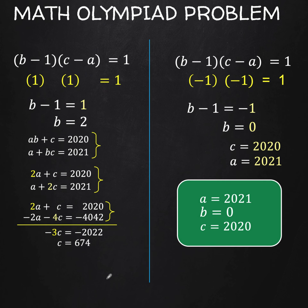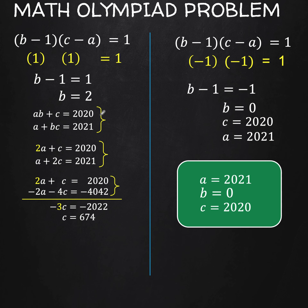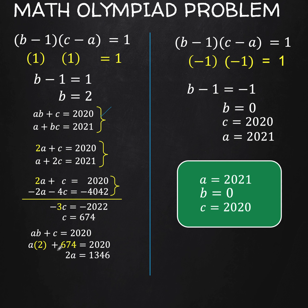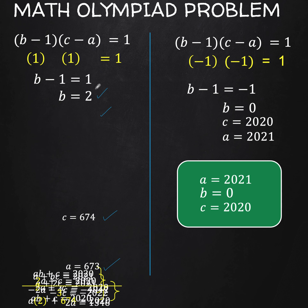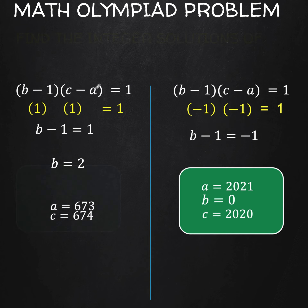We now know B equals 2 and C equals 674. To find A, take the first original equation AB plus C equals 2020 and substitute the known values of B and C. We get 2A plus 674 equals 2020. Subtracting 674 from both sides and dividing by 2, we find A equals 673. So we have all three values: A equals 673, B equals 2, and C equals 674.